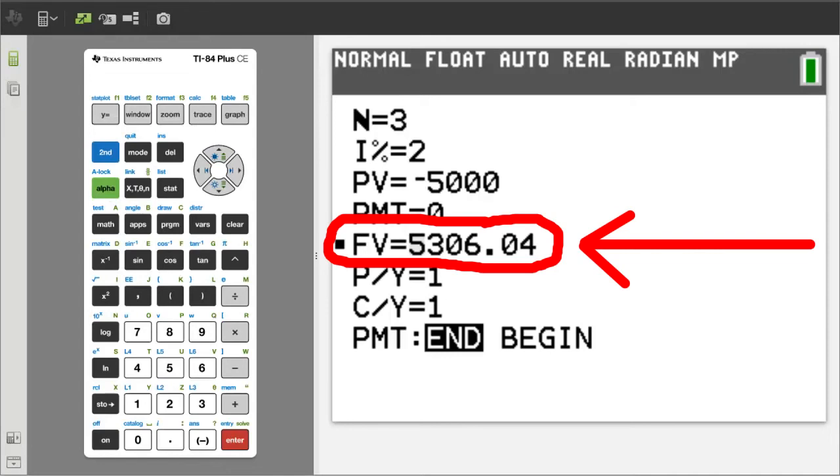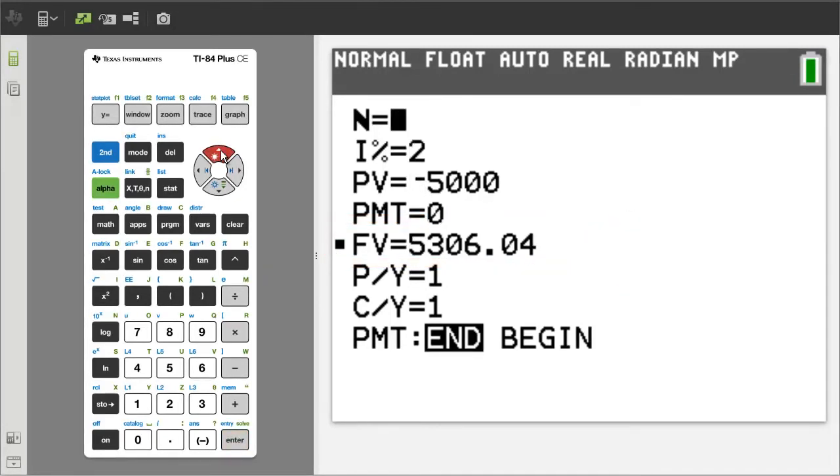If you are working similar homework problems, you can clear out each of these variables. I will go to the top by using the up arrow button. Then put a zero in each of the variables.